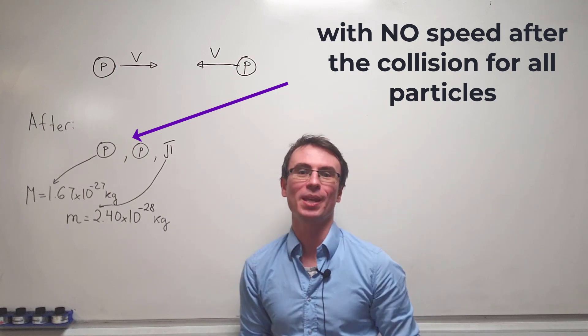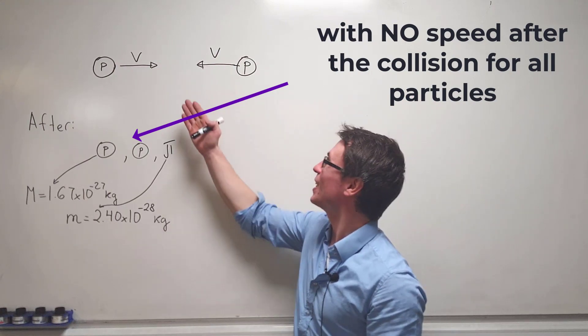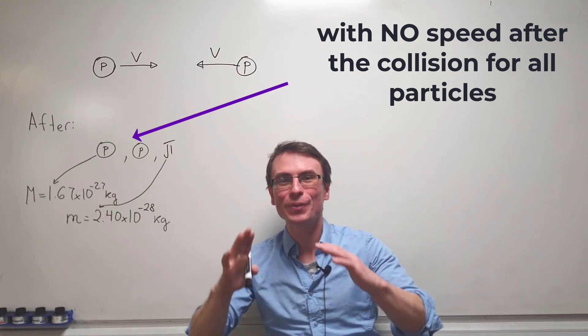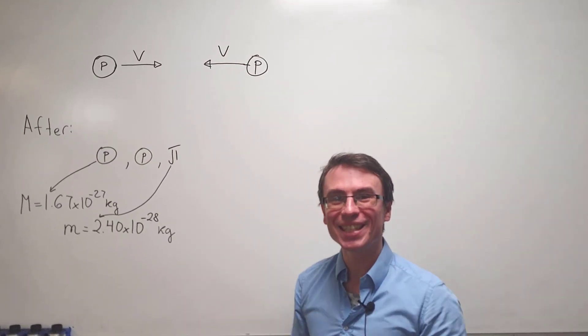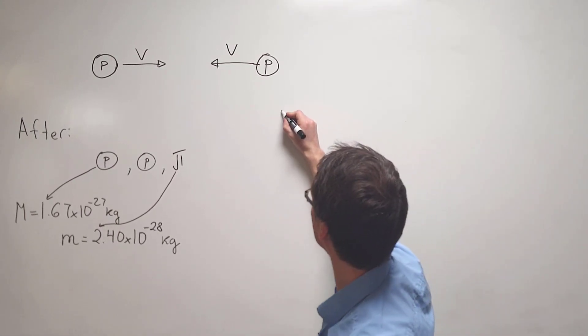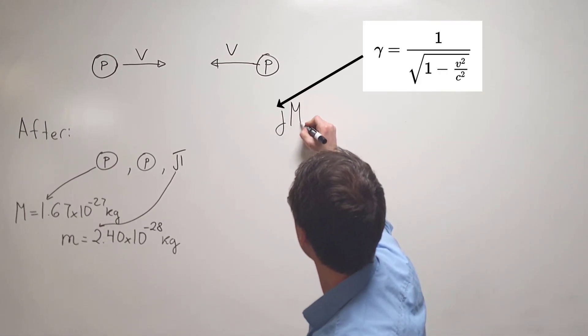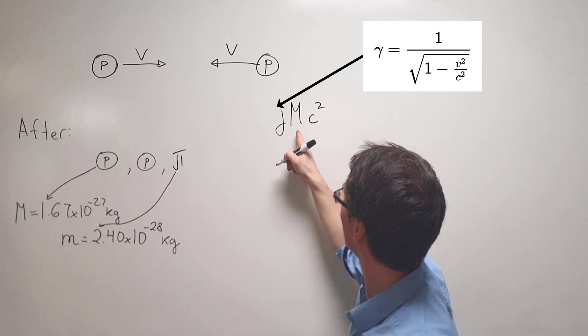We need to find the initial speed of the protons given that energy is conserved. In Einstein's theory of relativity, the total energy of a particle is given by gamma mc squared, where m is the mass of one proton.